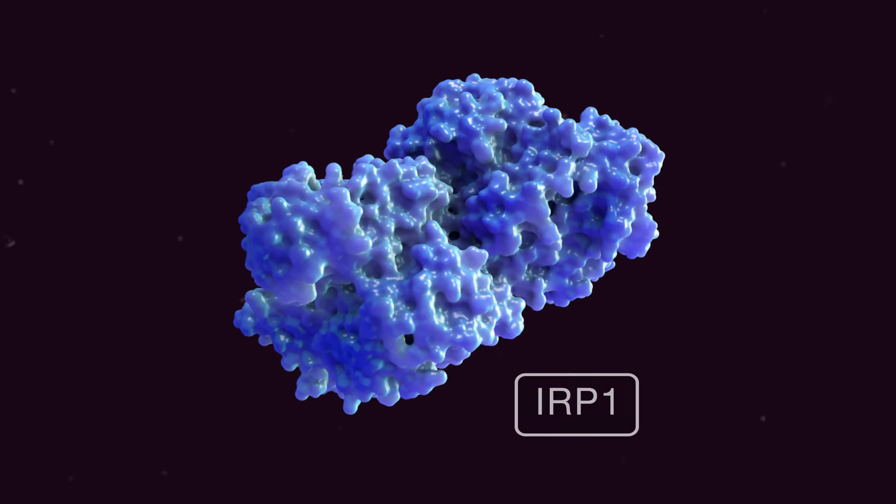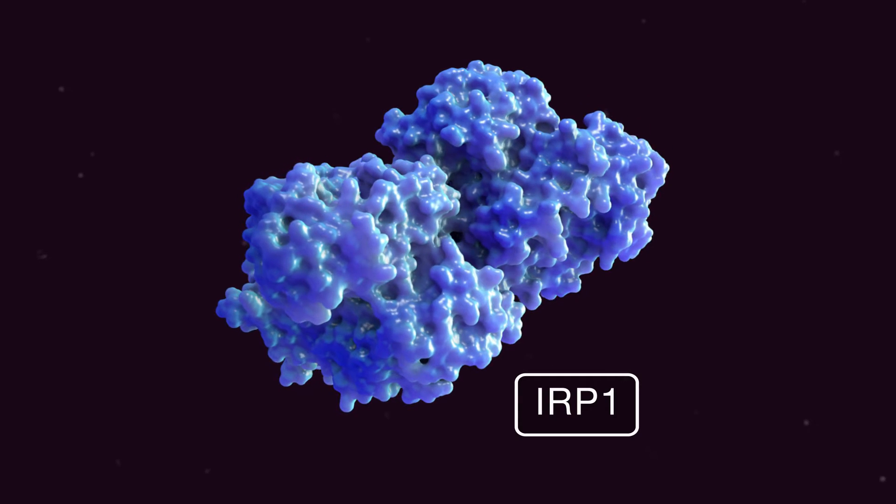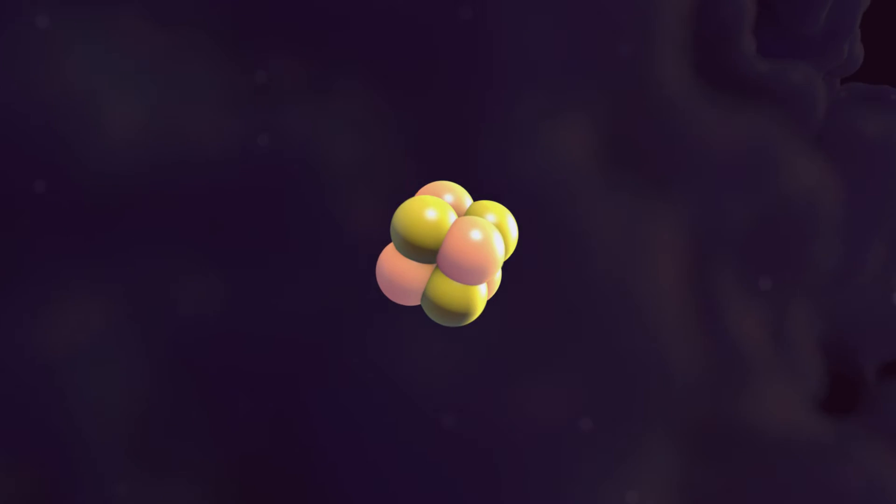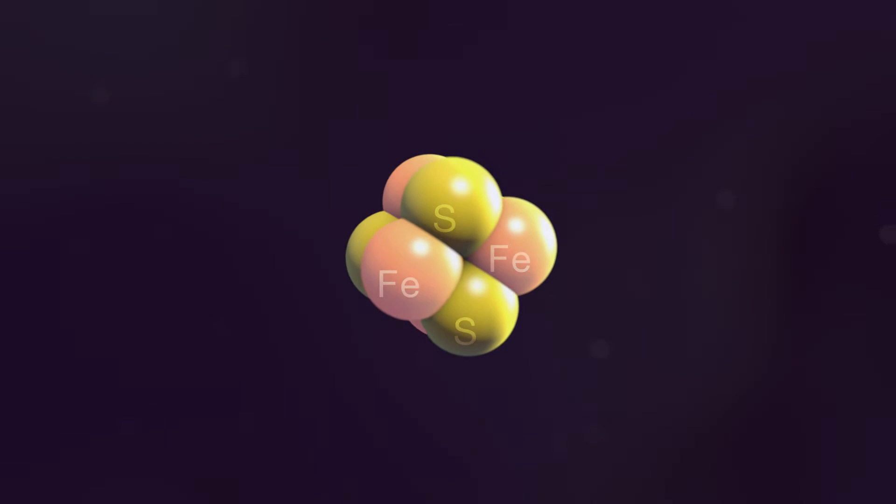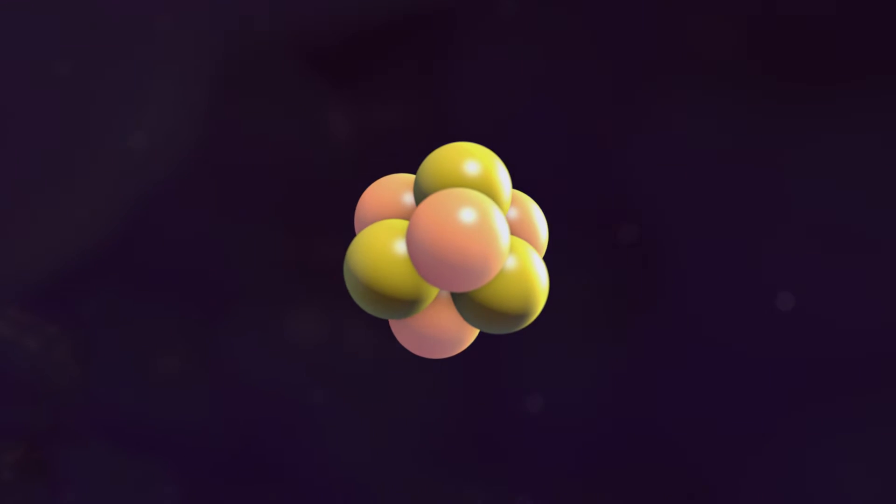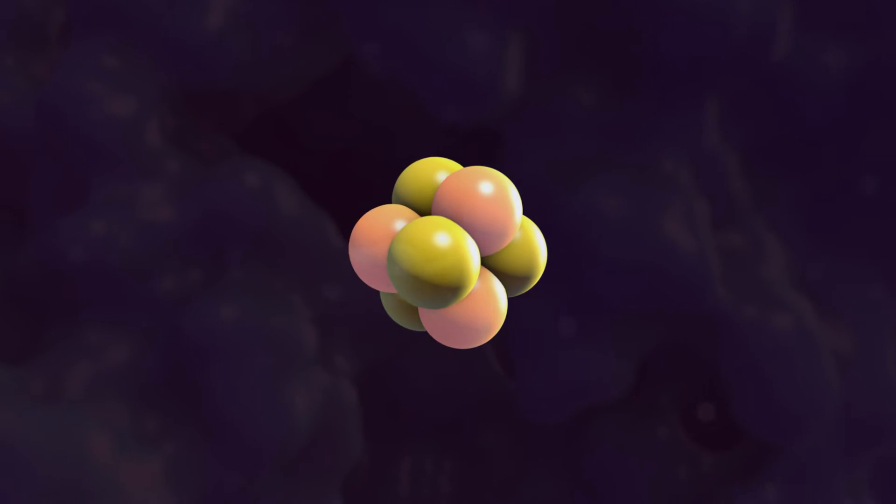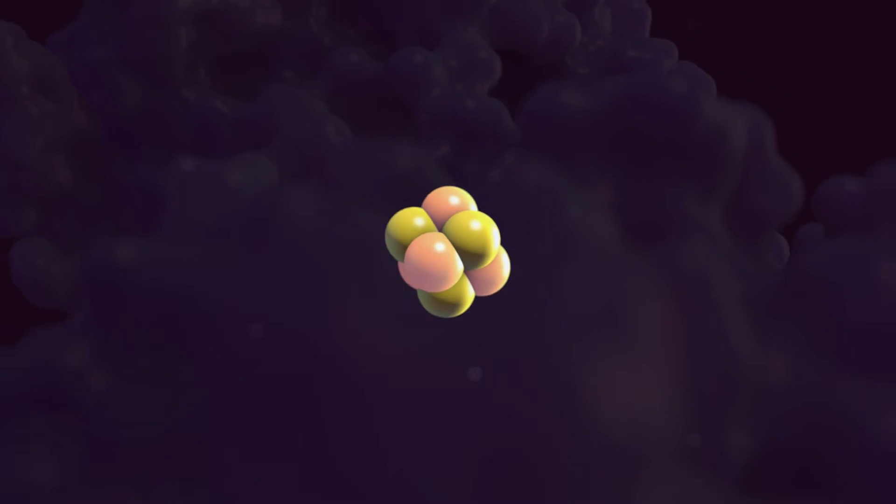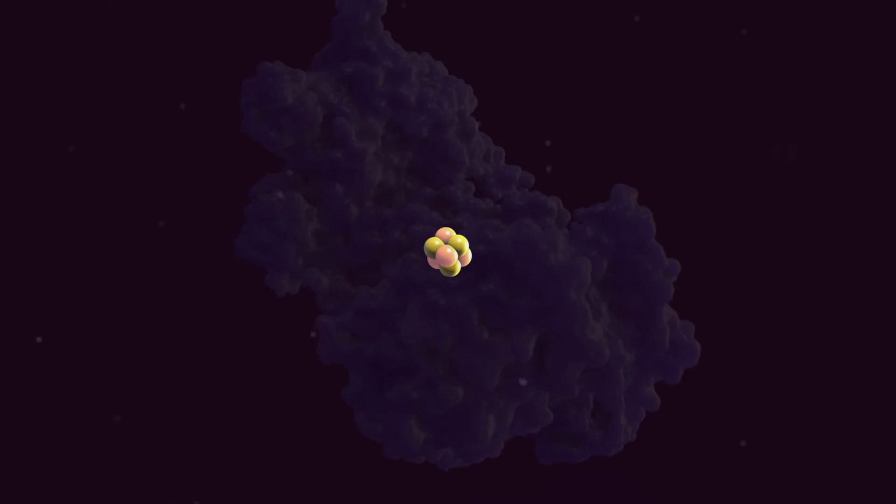In cells with sufficient iron levels, the iron regulatory proteins, or IRP1 proteins, contain iron-sulfur clusters with four iron atoms coordinated with four sulfur atoms. In this form, the iron regulatory proteins have cytosolic aconitase activity and are unable to bind to iron-responsive elements.